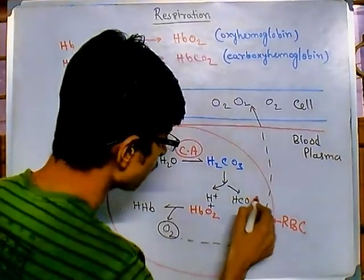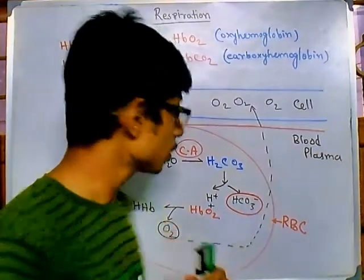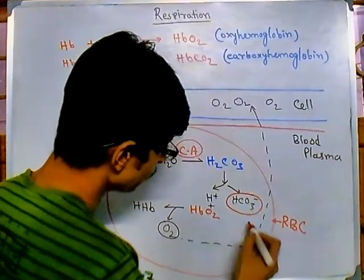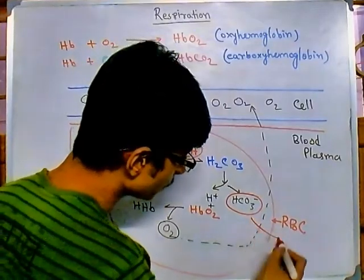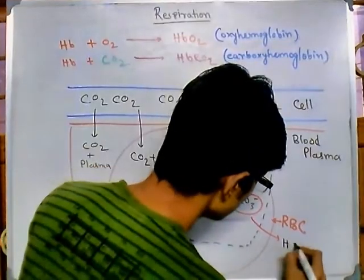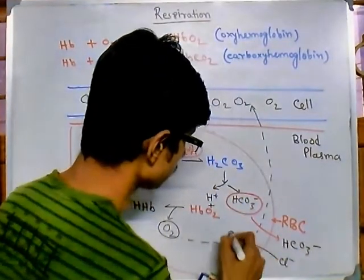Now this bicarbonate ion goes through chloride shift. So chloride shift will be there. And what is chloride shift? We know that in this case bicarbonate will be taken outside, instead chloride ion will be taken inside.